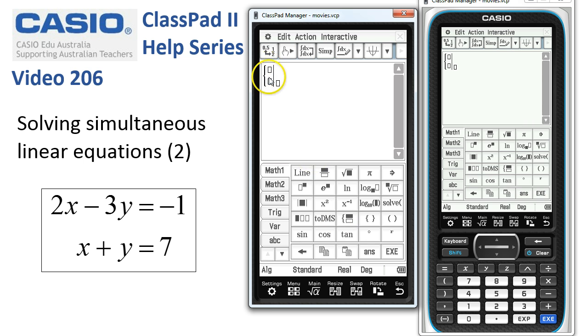Enter the equations into these two boxes and the variables into the third. So here I go: 2x minus 3y equals negative 1. I'll tap into the second box, and this equation is x plus y equals 7.